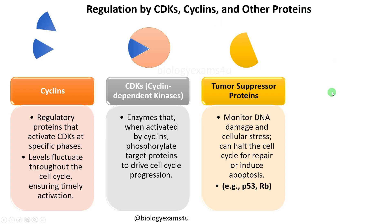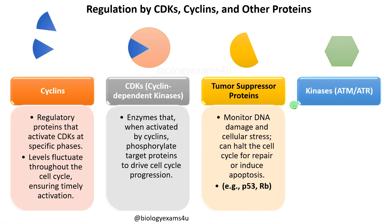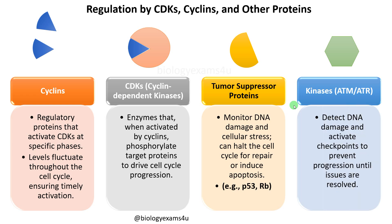The third class of proteins are tumor suppressor proteins like p53, Rb, etc. These proteins monitor DNA damage and cellular stress, and can halt the cell cycle for repair or induce apoptosis, or programmed cell death. The next class is the ATM and ATR kinases. These proteins detect DNA damage and activate checkpoint kinases to prevent progression until issues are resolved.